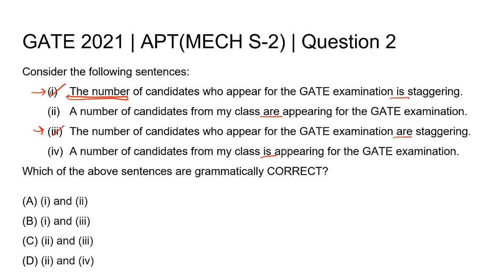So sentence 1 is correct and sentence 3 is wrong. For sentences 2 and 4, the subject is 'candidates'. The sentence is: 'A number of candidates from my class are appearing for the GATE examination.' This sentence is talking about candidates — how many candidates are appearing for the examination — while sentences 1 and 3 were talking about the number itself. That's why the subject of sentences 2 and 4 is 'candidates', which is plural.